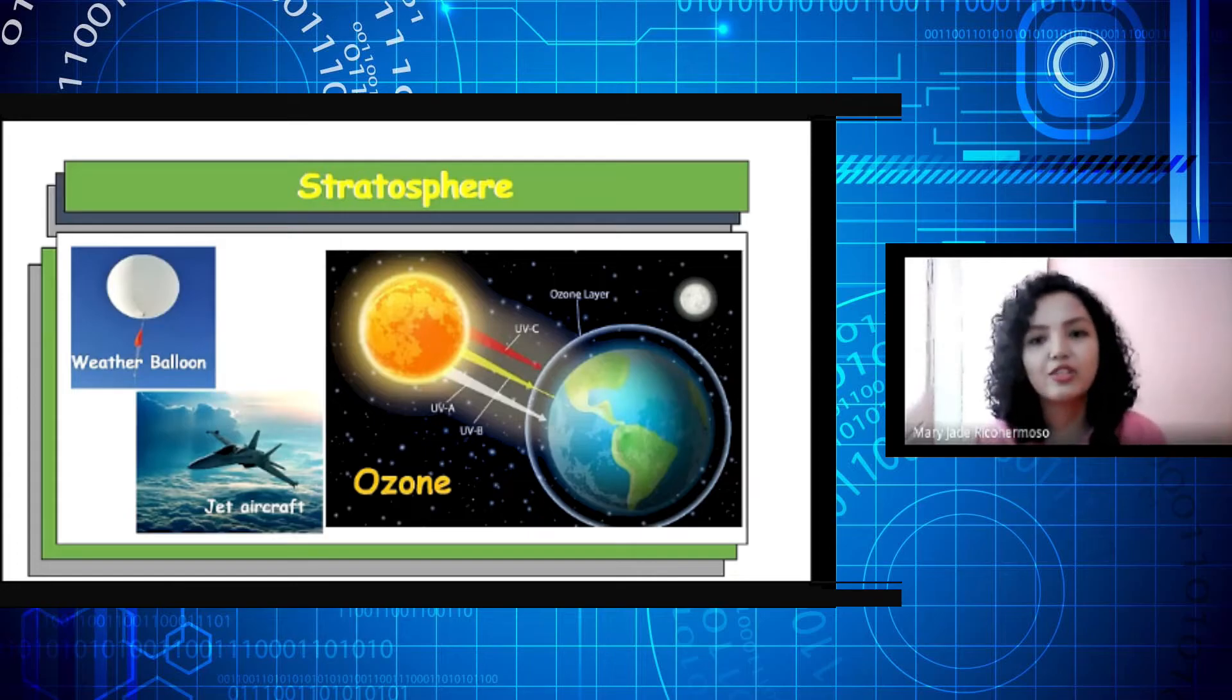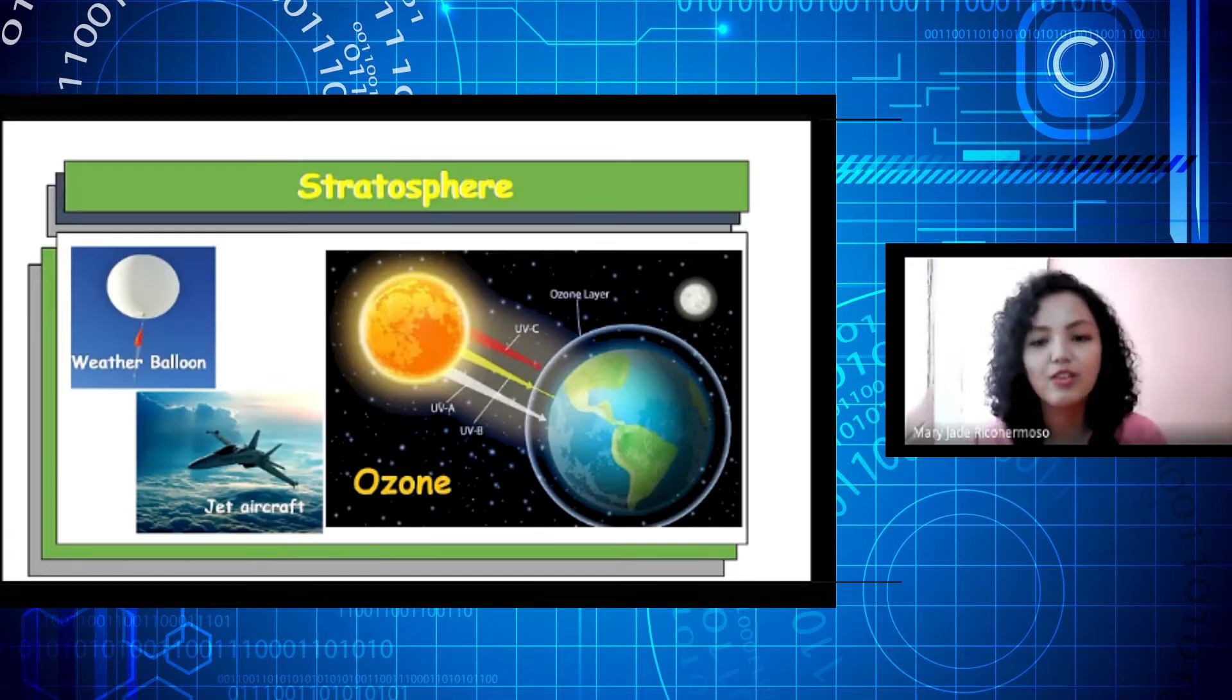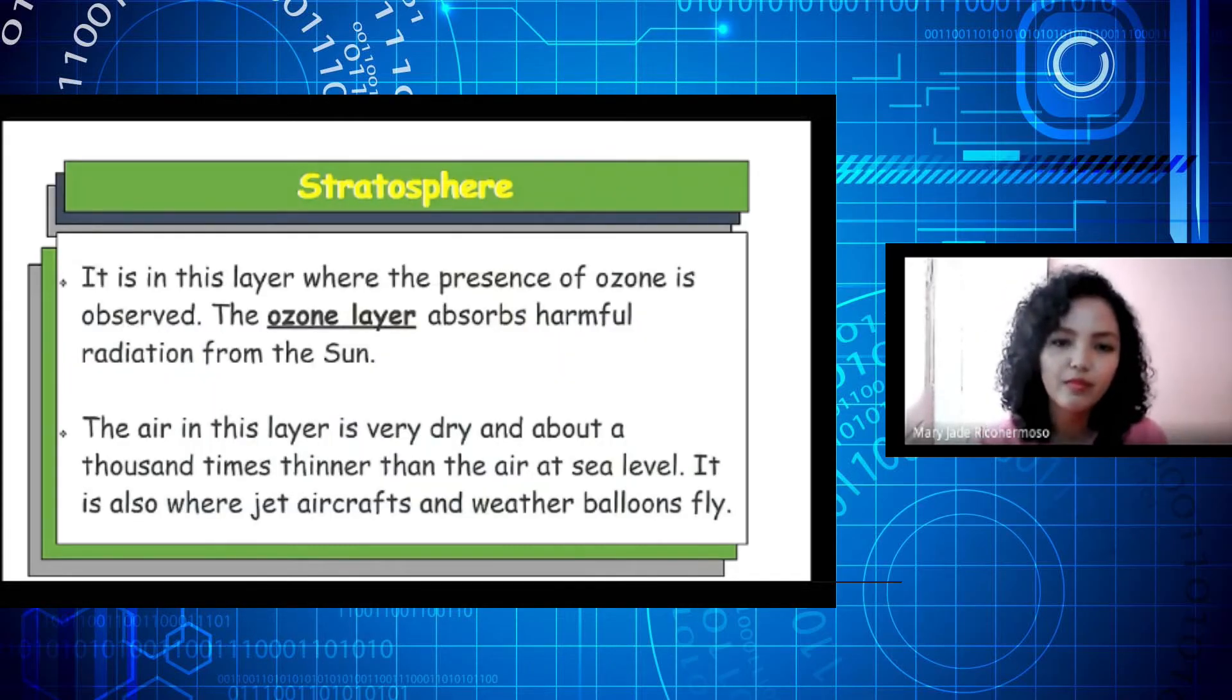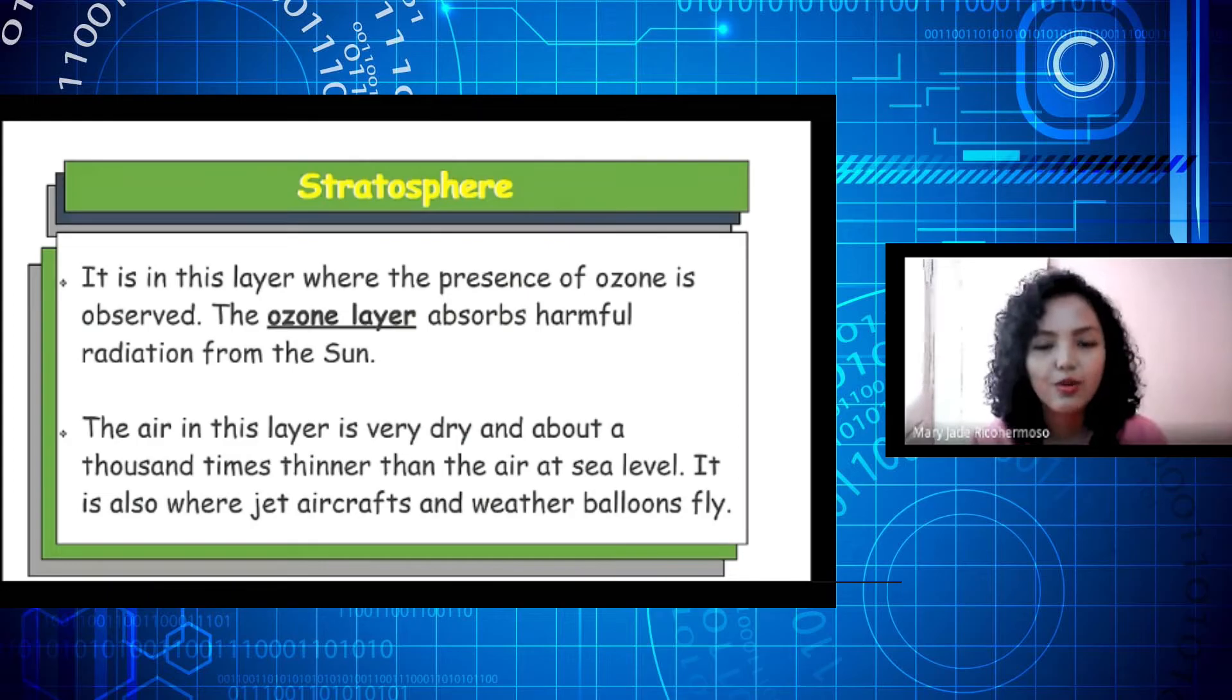The next layer is the stratosphere. In the stratosphere, we have weather balloons, jet aircraft, and ozone. It is in this layer where the presence of ozone is observed. The ozone layer absorbs harmful radiation from the sun. The air in this layer is very dry and about a thousand times thinner than the air at sea level. It is also where jet aircrafts and weather balloons fly.